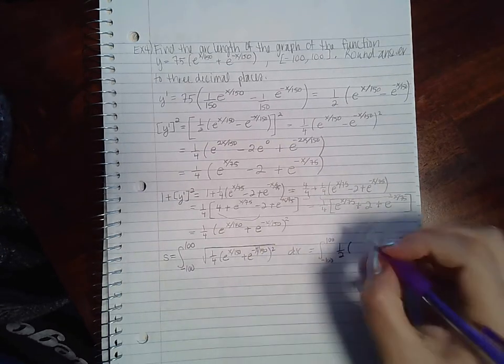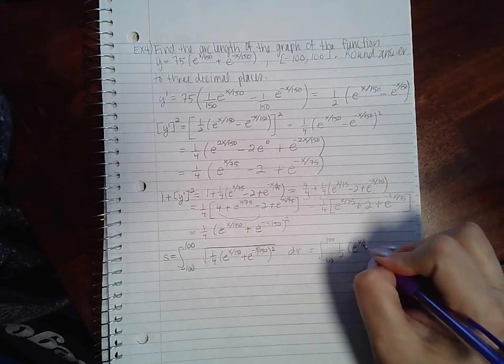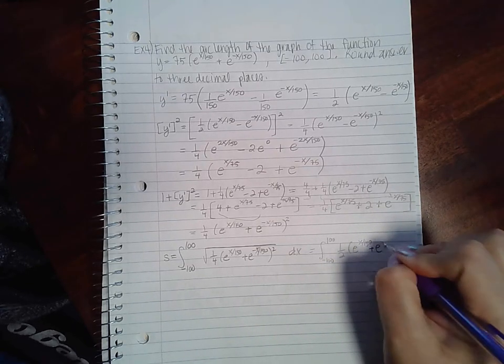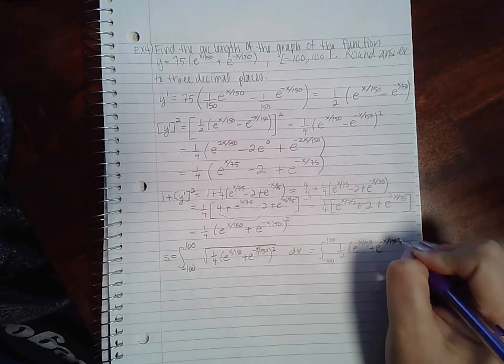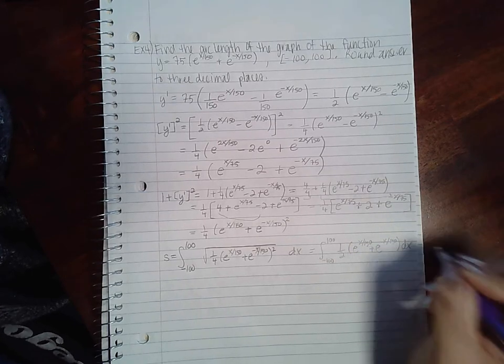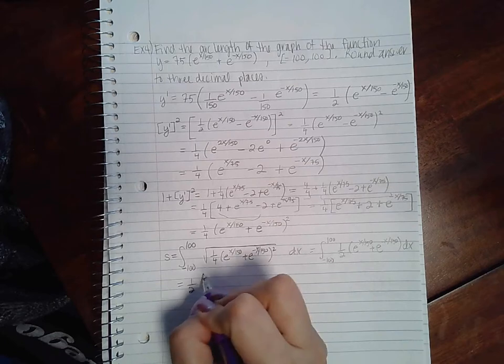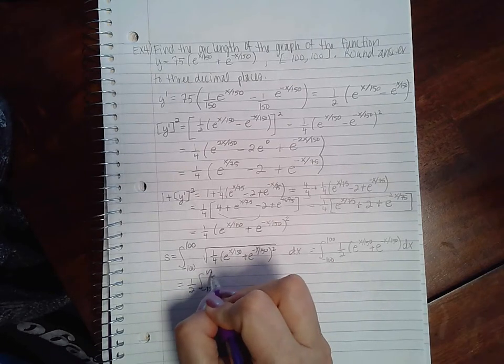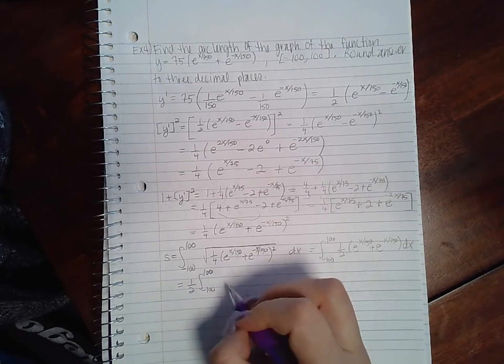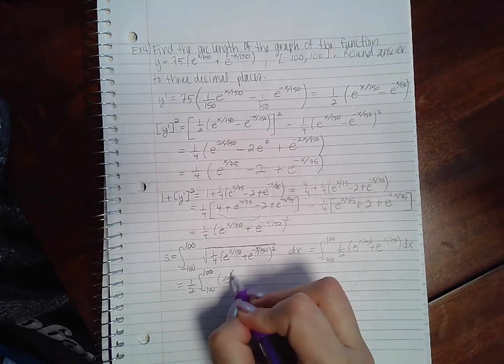So the square root of 1 fourth is 1 half, and then the square root and the square will undo each other. And so really you have the integral of each of these two terms.